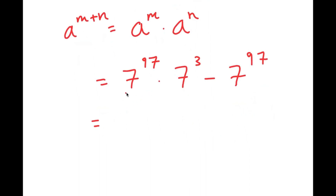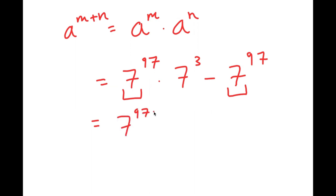From here, notice how both of my terms have 7 to the power of 97 in them. So I can simply factor out 7 to the power of 97, and I get 7 to the power of 97 times 7 to the power of 3 minus 1.